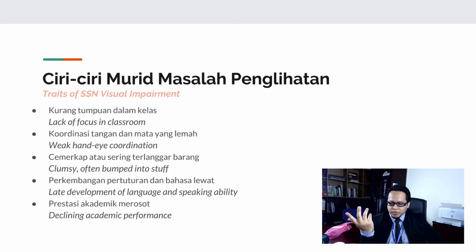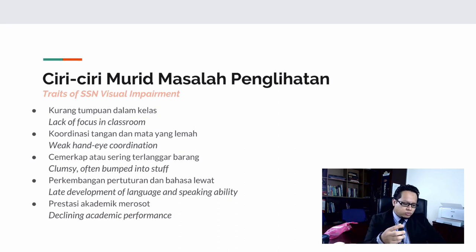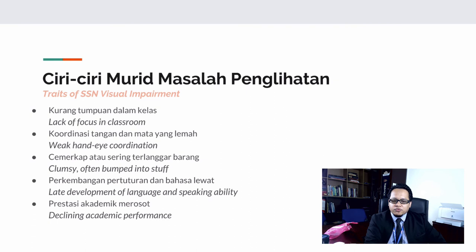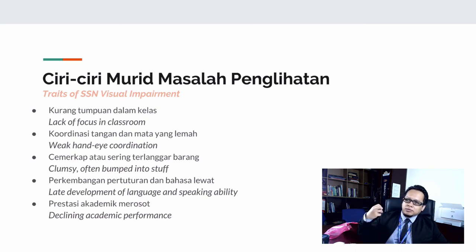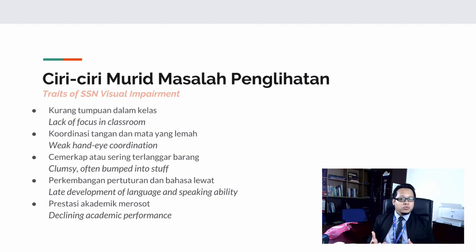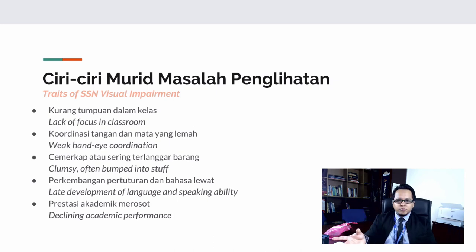Clumsiness is another trait — students with visual impairment may bump into things because they can't see well. Additionally, there may be late development of language and speaking ability, because they are unable to decipher visual cues such as alphabets and other elements that make up language. As a result of all these factors, their academic performance is also affected.